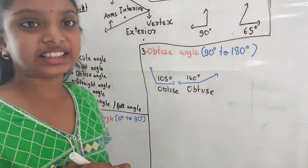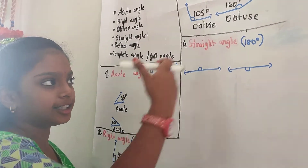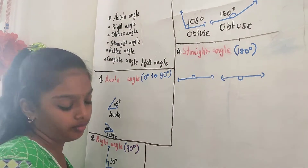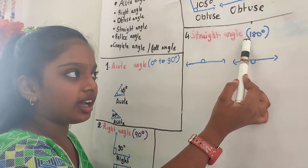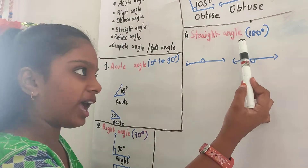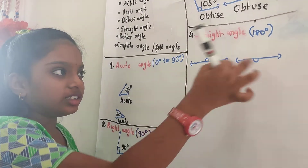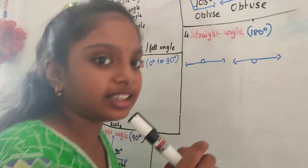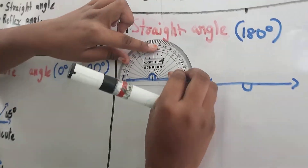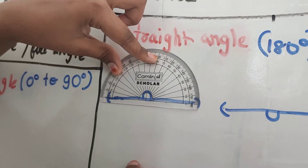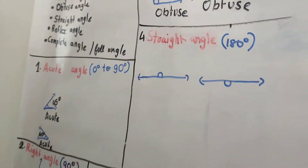Now, before the reflex angle, let us see the straight angle. A straight angle is the angle which is exactly 180 degrees. I have drawn this example — let us measure it and see. It is showing 180, so it is a straight angle.